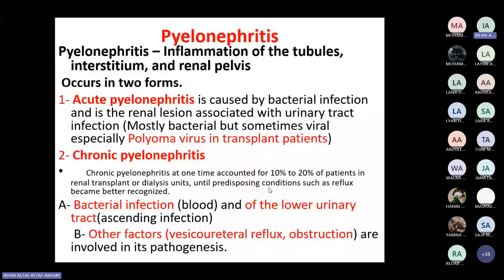Types of pyelonephritis: bacterial infections coming either from the lower urinary tract as ascending infection, or through the blood. If someone has a focus of infection in the spleen, lungs, or meninges, bacteremia will come to the kidney — hematogenous pyelonephritis. Another type is due to obstruction causing stasis of urine in the pelvicalyceal system, increasing chances of infection.